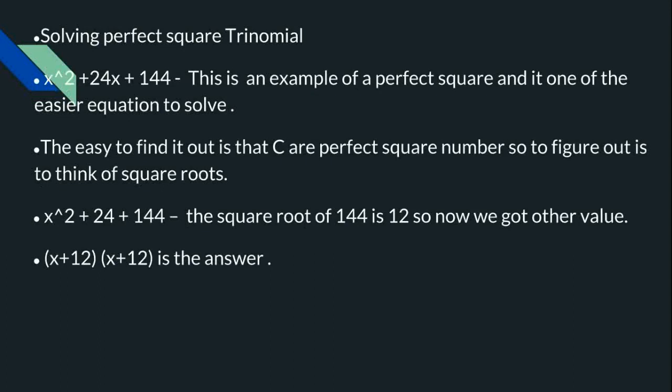One of the special trinomials you could get is x² + 24x + 144. This is an example of a perfect square because the square root of 144 is 12. So this is kind of easy. We just need to find the square root of this, and that is 12. And we got our two values: (x + 12)(x + 12).